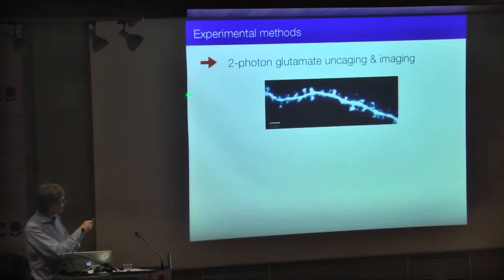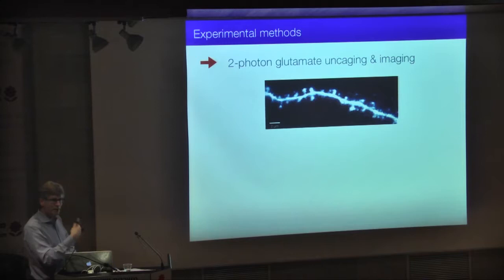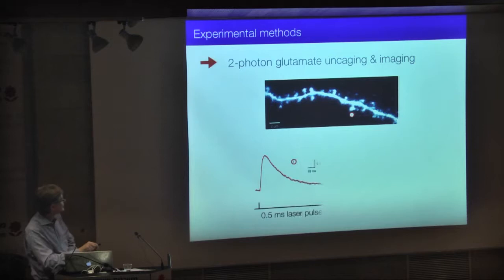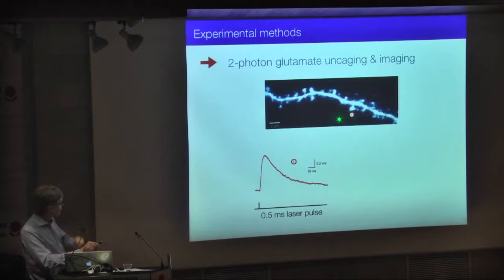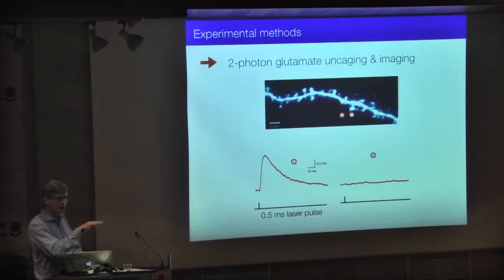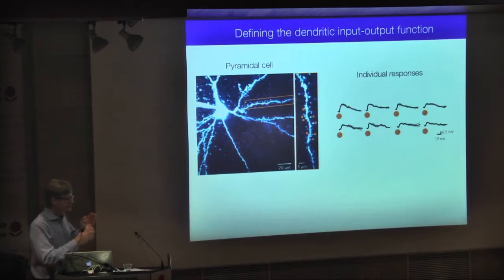Here's a basal dendrite of a layer 2-3 pyramidal cell filled with fluorescent dye, imaged with a two-photon microscope — you can see the individual spines. We bathe this dendrite with the caged compound MNI glutamate and then target activation of individual spine synapses by focusing two-photon excitation onto individual spine heads. The simultaneous somatic whole-cell recording shows the response to two-photon uncaging at the spine head. Moving the uncaging spot a couple of microns to the left wipes out the response — demonstrating the necessary spatial precision.